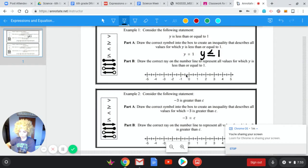The second part, part B, is to draw the correct ray. So the ray is the circle with the line going either direction. So one of these options here. Draw the correct ray on the number line to represent all values for which y is less than or equal to one.